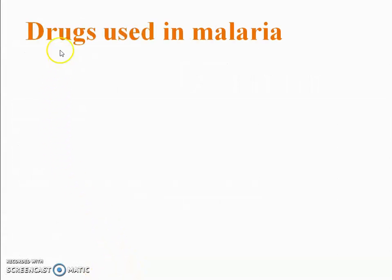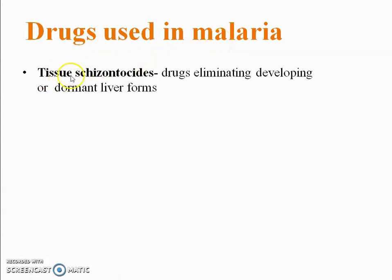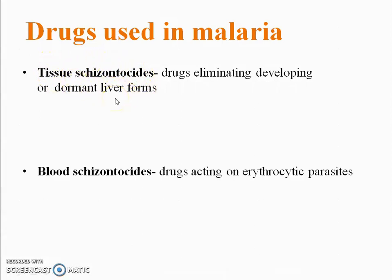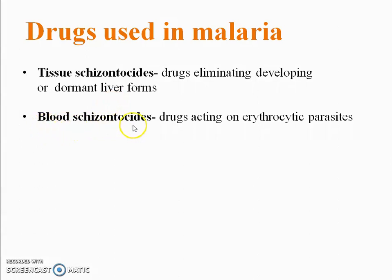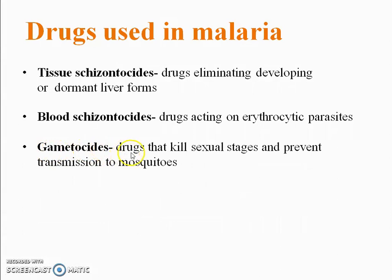Now we look at the drugs used in malaria. First, tissue schizonticides: these are drugs eliminating developing or dormant liver forms — mainly effective in the liver. Second, blood schizonticides: drugs acting on erythrocytic parasites when they enter RBCs. Third, gametocytals: drugs that kill the sexual stage and prevent transmission to the mosquito — when male and female gametes are produced, gametocytals kill those gametes and prevent transmission to the mosquito.